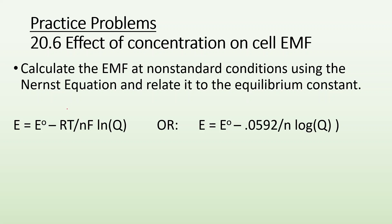We've got really one equation but two forms of it. The cell potential equals the cell potential at standard conditions minus R times T divided by N, the number of electrons being transferred, times F, the Faraday constant, times the natural log of Q, being that reaction quotient. Or if you want to do it at standard temperature and combine all those constants, you end up with this version of that equation. I keep going back to the first one — that's the one I lean on.